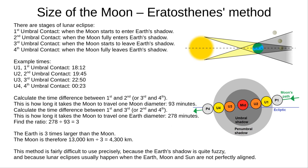We then simply find the ratio of these. And we've got the ratio of the moon and Earth's diameter. In this case it's one to three. So the Earth is about three times larger than the moon. The moon is just 13,000 kilometers divided by three. That gives us about 4,300 kilometers.